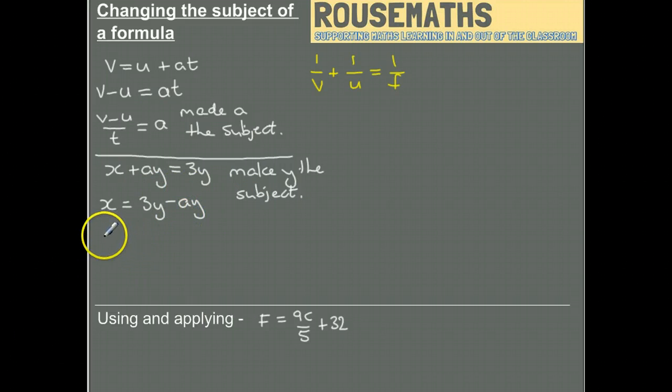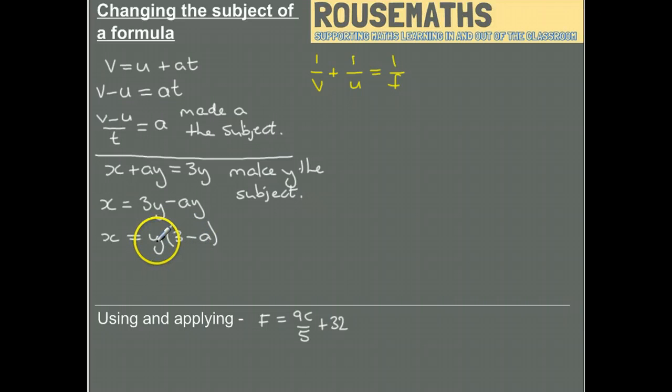I'm now going to factorize the right-hand side. Because there's a y in both, I can take this outside of a bracket. What I achieve is now I've only got one y in my formula when before there were two y's.